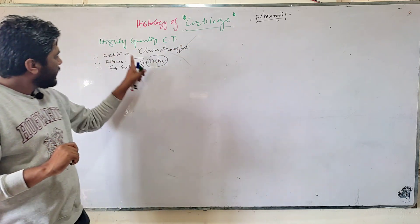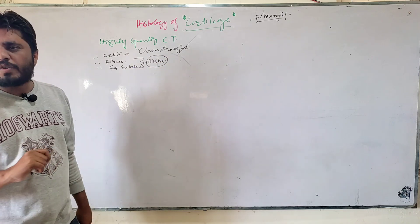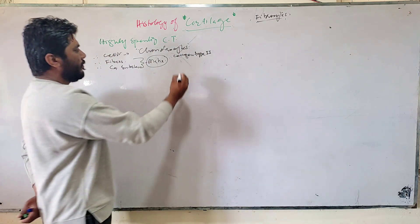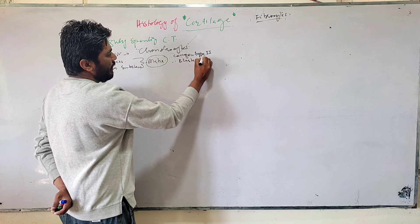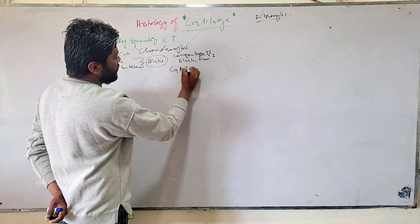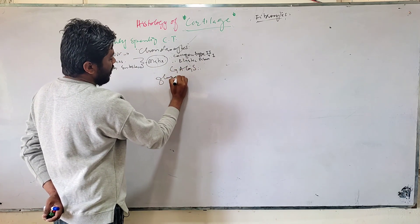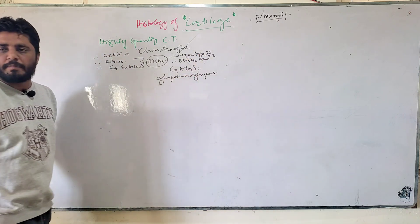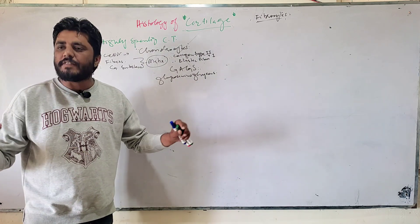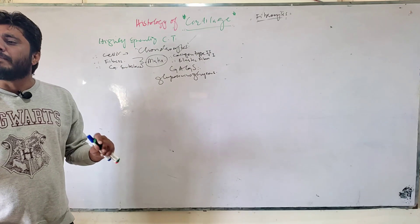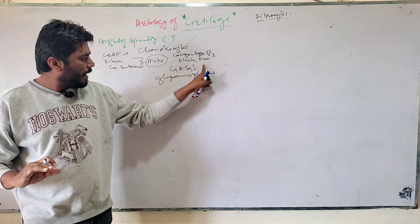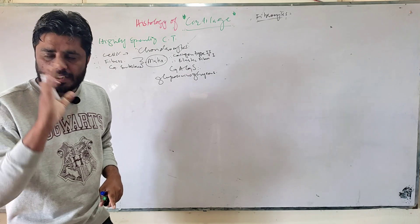In the case of cartilage, the cell we have is the chondrocyte. If you look into the fibers, we mainly have collagen fiber type 2, along with elastic fiber, and maybe collagen type 1 as well. For ground substance, we have GAGs — glycosaminoglycans — which are complex sugar molecules.